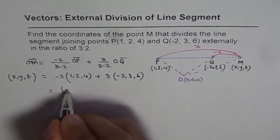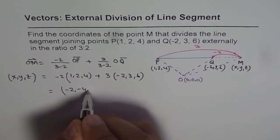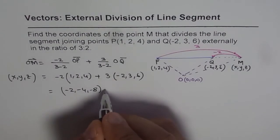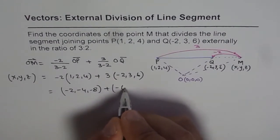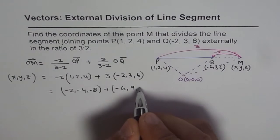Multiplying, we get (-2, -4, -8) plus (-6, 9, 18).